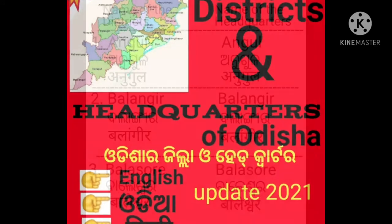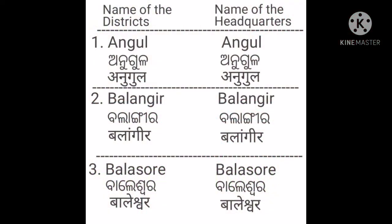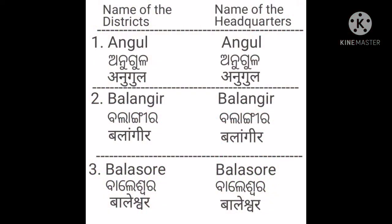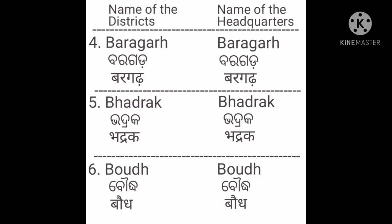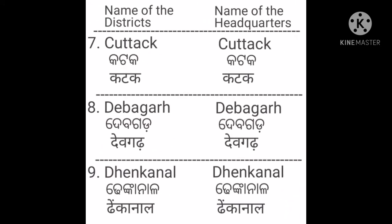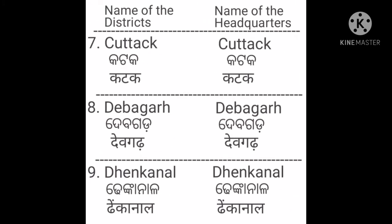Name of the districts is on the left side and name of the headquarters is on the right side. Angul — Angul. Balangir — Balangir. Baleshwar, with the headquarter Baleshwar. Baragarh — Baragarh. Bhadrak — Bhadrak. Then number seven: Kendrapara — Kendrapara. Deogarh — Deogarh. Nayagarh — Nayagarh.